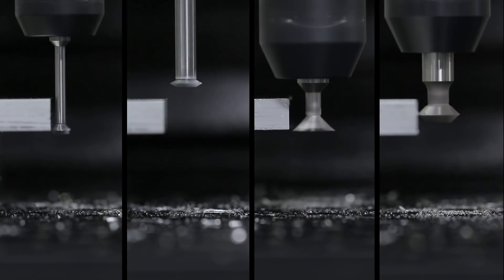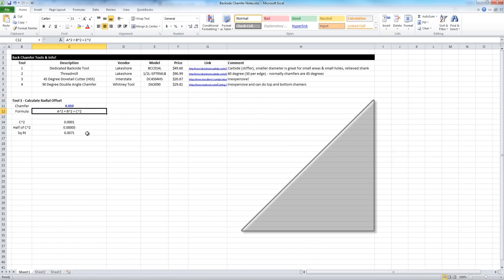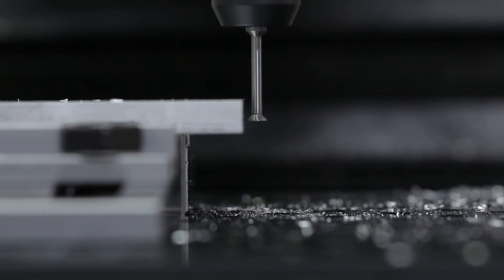Widget 184 focuses on backside chamfering tools. What different tools you can use, how to program them, speeds and feeds and other tips and tricks.